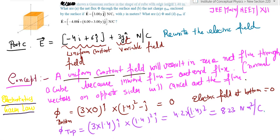Therefore, what you're left with is only the variable part of the field which is 3yj. And therefore the net flux again comes out to be 8.23. So in part A also the flux was the same and in part C the flux is the same.